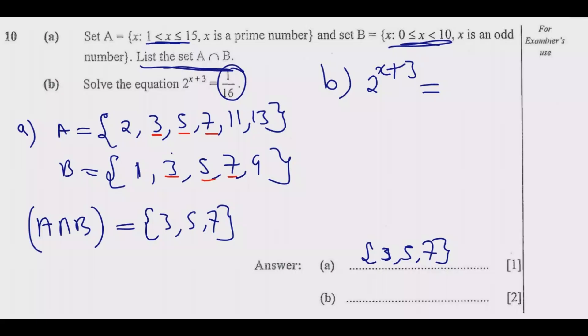If I had to get 16, we need to multiply 2 by itself 4 times: 2 times 2 is 4, times 2 is 8, times 2 is 16. So this is the same as 1 over 2^4, which is the same as 2^(x+3) = 2^(-4).